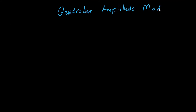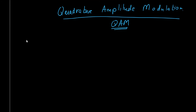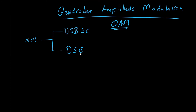This video is about Quadrature Amplitude Modulation, also referred to as QAM. Let us begin our discussion by considering that we have a message signal M of t, and we modulate it either by means of double sideband suppressed carrier (DSB-SC) or by means of double sideband with large carrier, which you can also call AM. In both schemes,